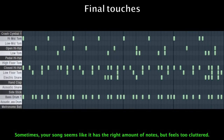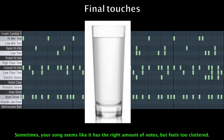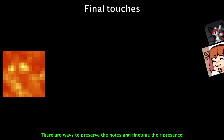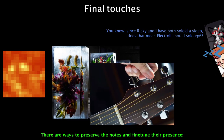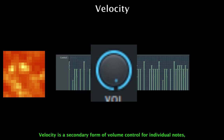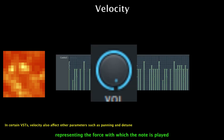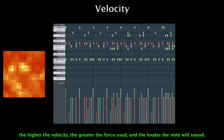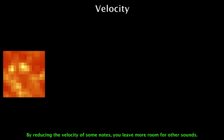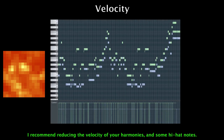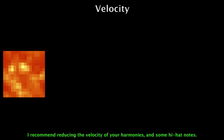Sometimes your song seems like it has the right amount of notes but feels too cluttered. Yet if you remove some notes, it's too empty. There are ways to preserve the notes and fine-tune their presence. Velocity is the second form of volume control for individual notes, representing the force with which the note is played. The higher the velocity, the greater the force used, and the louder the note will sound. By reducing the velocity of some notes, you leave more room for other sounds. I recommend reducing the velocity of your harmonies and some hi-hat notes. You can also play around with the velocity of snares at the end of sections.